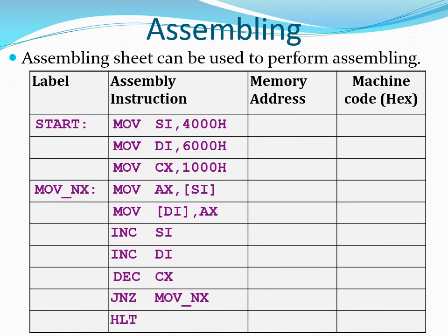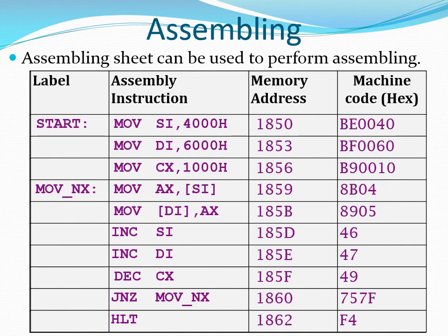After developing your program, you write it into the first two columns — labels in the first column and assembly instructions in the second column. You then determine the equivalent machine codes for each instruction and the addresses at which they will be loaded in memory. The first instruction loads starting from address 1850H and is 3 bytes, so the next address is 1853. The second instruction is also 3 bytes, so adding 3 to 1853 gives the next starting address of 1856. You repeat the process until you reach the end.